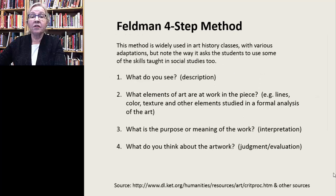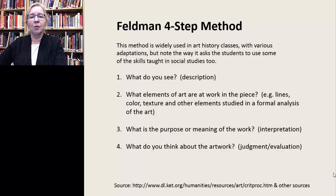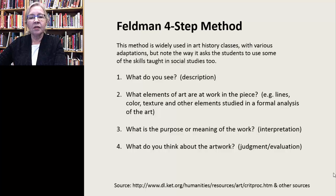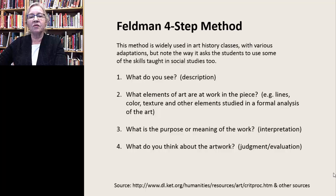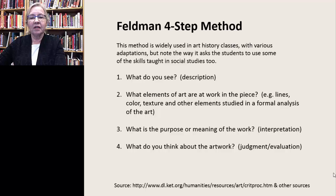A third strategy — one often used in art history and criticism — is the Feldman four-step method. There are variations on it, but it starts the same way as the others and then goes in somewhat different directions employing higher-level thinking skills. What do you see? — that's description. What elements of art are at work in the piece? — that's formal analysis, covering elements like lines, color, and texture, as Karla Stansifer demonstrated. What is the purpose or meaning of the work? — that's interpretation, for which you'll need additional information. Finally, what do you think about the artwork? — that's judgment and evaluation.